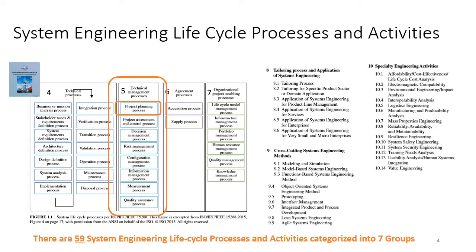Section 4 has the technical processes — how to design, build, test, and deploy a system. Section 5 is more related to how to manage that process. These are the technical management processes, and the first one of these is the project planning process.